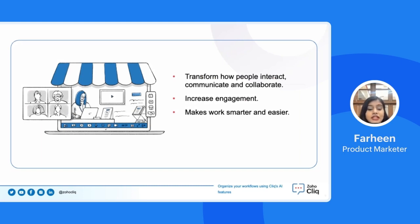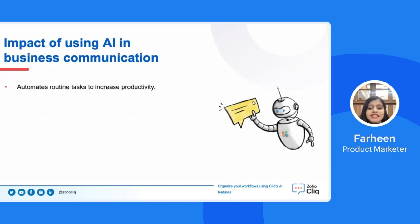The use of AI in business communication has increased in recent years, transforming how people interact, collaborate, and communicate. The tools that facilitate workplace collaboration use AI to increase engagement. AI in communication has made work easier and smarter, providing numerous capabilities that could radically change the way businesses are managed. Automating routine tasks is an excellent strategy to save time — you can streamline repetitive processes, reduce errors, and focus on more important and complex tasks. AI enhances engagement in internal communication through intelligent chatbots, collaboration platforms like Zoho Cliq, virtual assistants, and more.